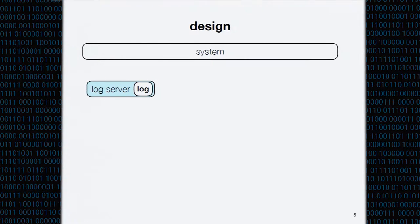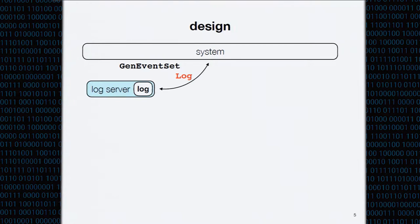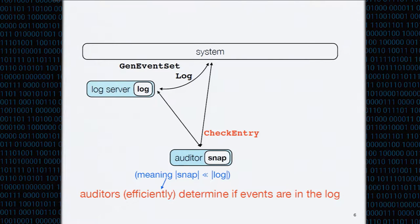The system generates events via some fully abstract algorithm, and then wants to include these events into the log via an interactive log protocol run between the system and the log server. To check after the fact that events actually got included, we introduce another entity called an auditor. The auditor maintains a snapshot of the log - essentially a very succinct representation on the order of one hash. Despite this succinctness, the auditor can efficiently check if events are in the log via an interactive check-entry protocol.